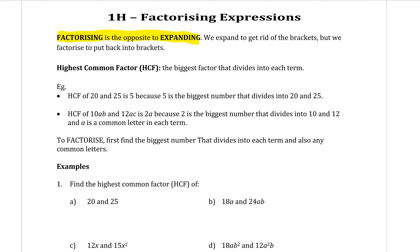To do that, we need to be able to find the highest common factor, otherwise known as HCF, which is the biggest number and letters that are in common to both terms. For example, if I had the numbers 20 and 25, I want to think of the highest number that I can divide both of them by. Hopefully you're thinking of 5 — both of those numbers divide evenly by 5 with no decimals. So 5 is the biggest factor we can pull out.